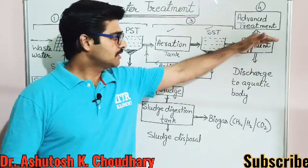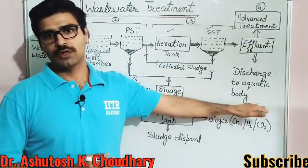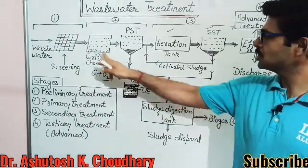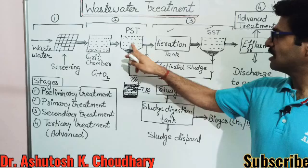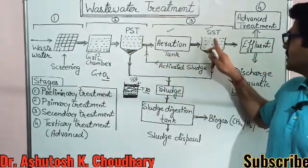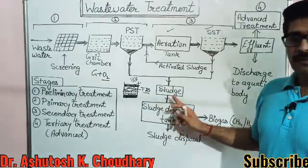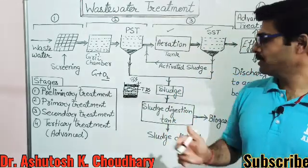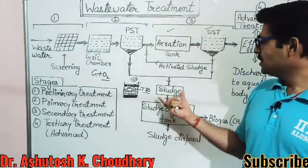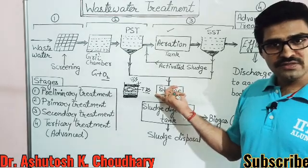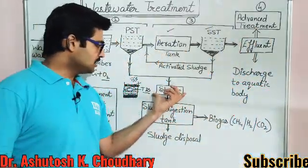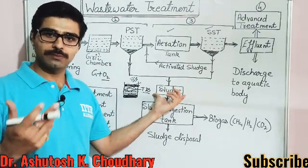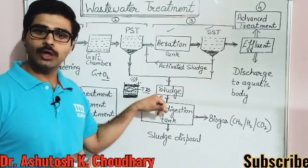Throughout this whole process, the sludge we get — from the primary sedimentation tank and the secondary sedimentation tank — is also a resource for us. Because sludge is concentrated in organic matter, it can be used for biogas generation.